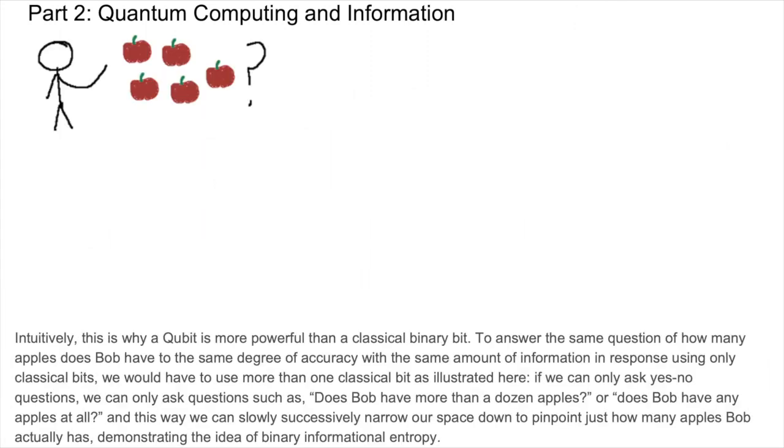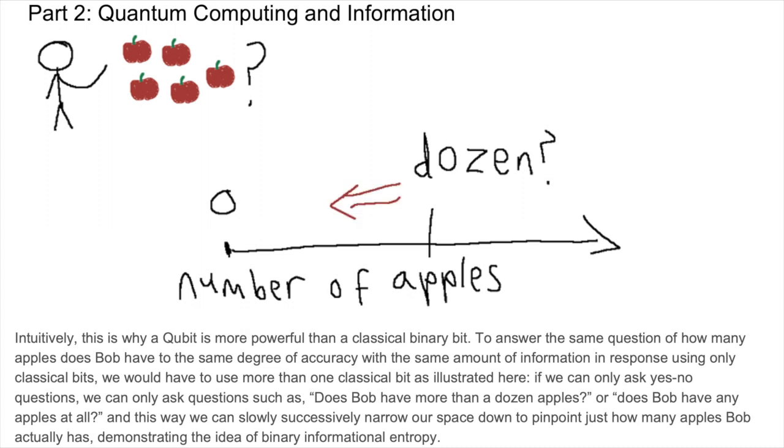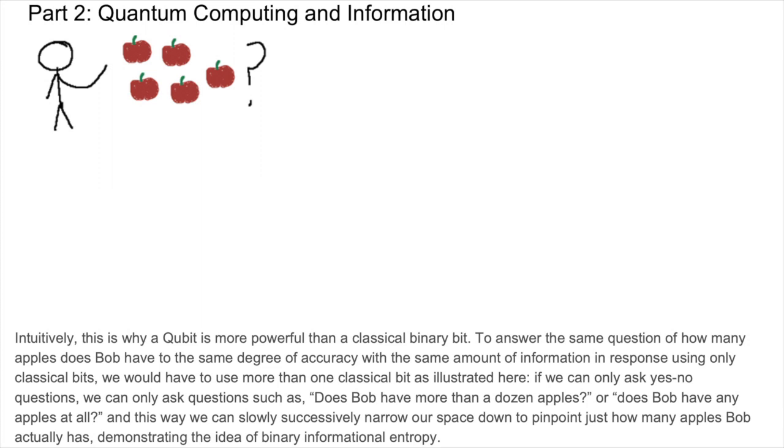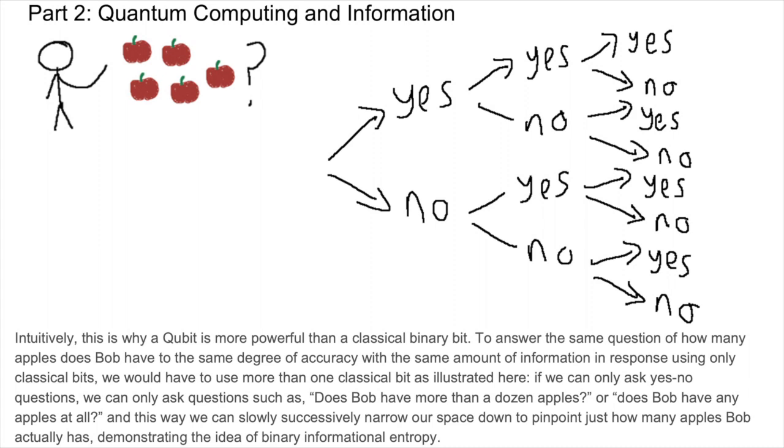Intuitively, this is why a qubit is more powerful than a classical binary bit. To answer the same question of how many apples does Bob have to the same degree of accuracy with the same amount of information in response using only classical bits, we would have to use more than one classical bit, as illustrated here. If we can only ask yes-no questions, we can only ask questions such as does Bob have more than a dozen apples, or does Bob have any apples at all? And this way we can slowly successively narrow our search space down to pinpoint just how many apples Bob actually has, demonstrating the idea of binary informational entropy.